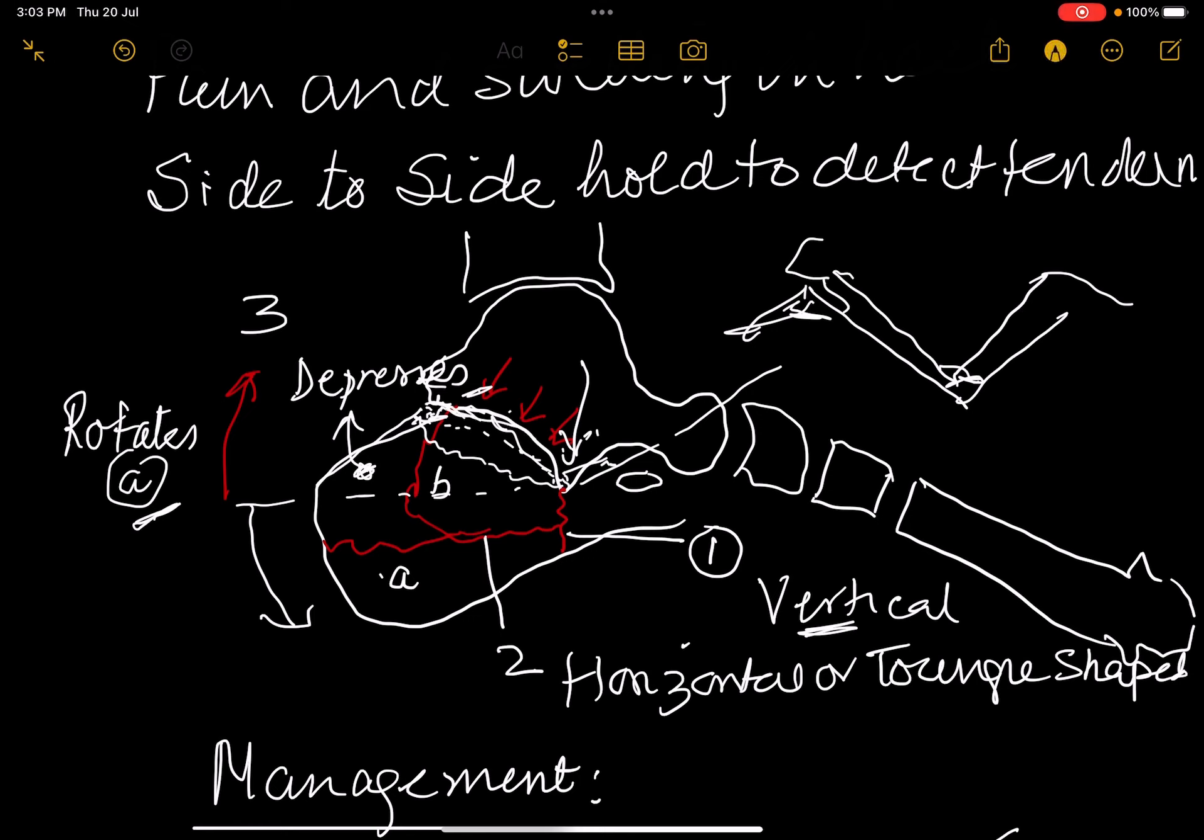The fracture lies here somewhere, the depressed portion. It has to be elevated. So first a vertical fracture, second a horizontal fracture or a tongue-shaped fracture, and third a rotation or a depression and or a depression. This classification is called the Essex-Lopresti classification.